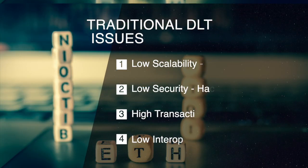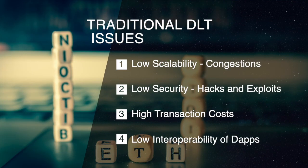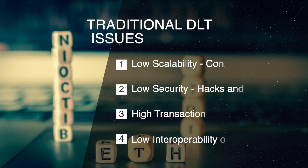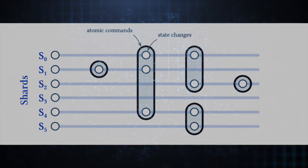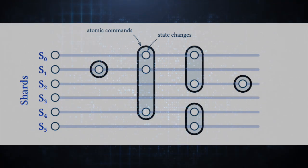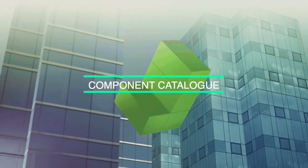While traditional platforms suffer from issues like low scalability, security issues, high transaction costs, and low interoperability of dApps, Radix is using a new consensus algorithm called Cerberus. It is based on a three-commit phase and parallel processing of decentralized applications and networks. Database sharding creates an immensely secure and scalable system for the shared storage and accessing of data.